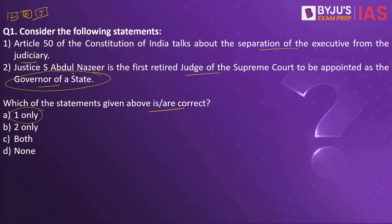For example, Justice M. Fatima Bibi was appointed as governor, and former Chief Justice of India Justice P. Sathasivam was also appointed as governor of Kerala. These are examples of Supreme Court judges being appointed as governors. The question is: should Supreme Court or High Court judges be allowed to take up executive roles? Please put your opinion in the comment section.